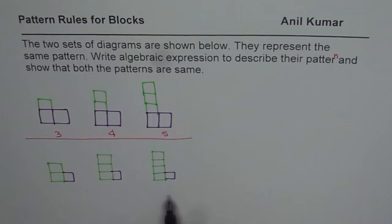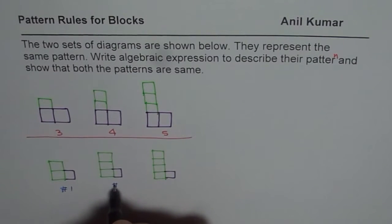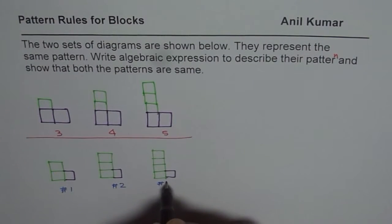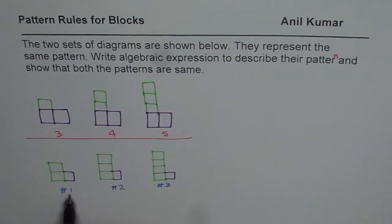Let's see how to do it. We'll call them figure number one, figure number two, and figure number three. Now, to write the pattern, we say let n be the figure number. So the variable for me is n, which is the figure number.